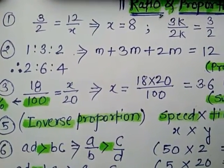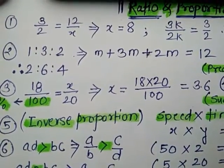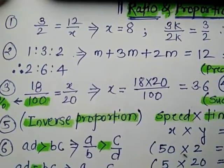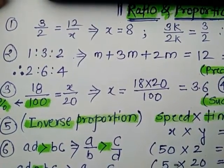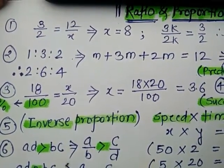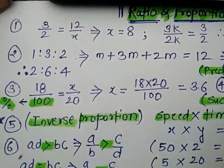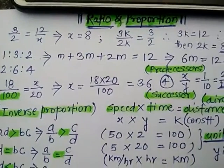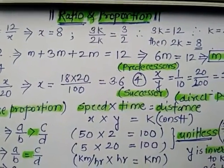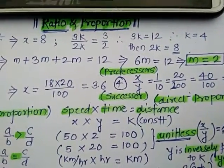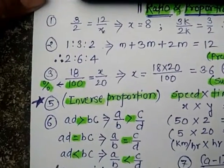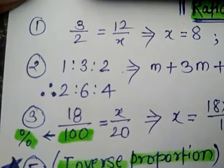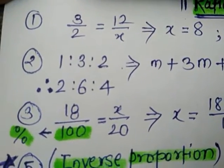In the proportion 1 is to 3 is to 2, we can add these numbers: M plus 3M plus 2M is equal to 12. Then we can find out M value is 2. Putting M as 2, we get 2 is to 6 is to 4.